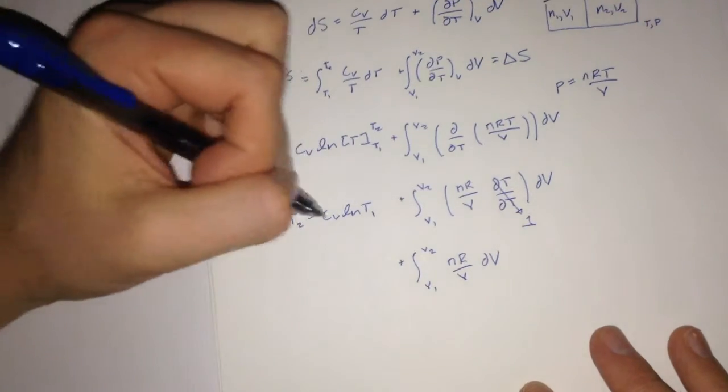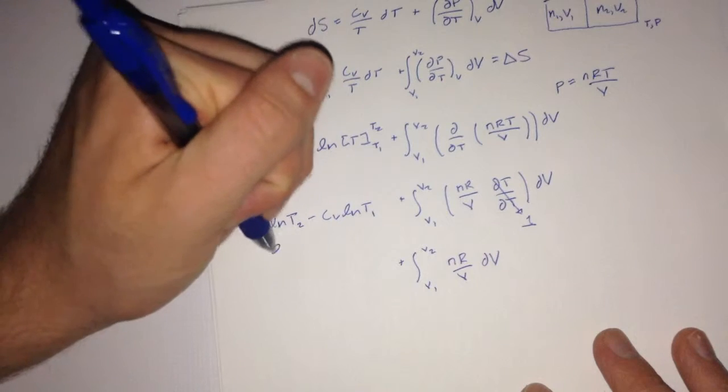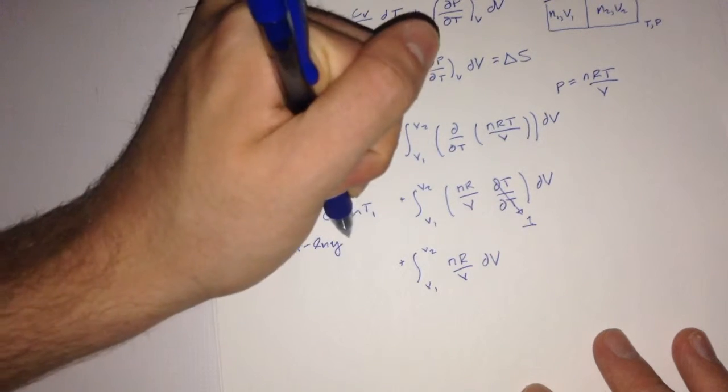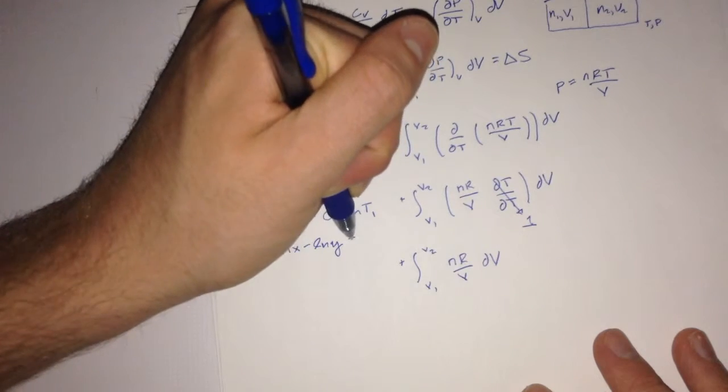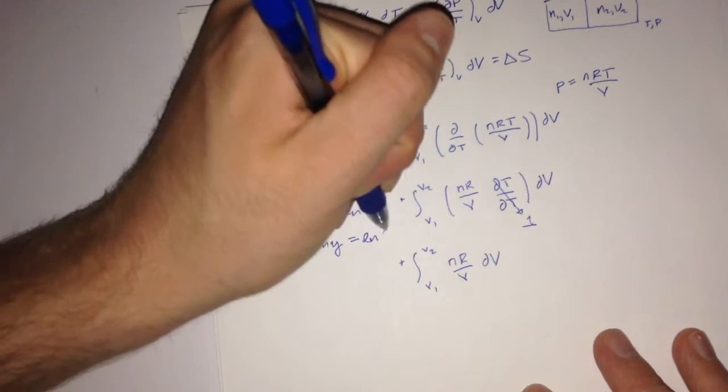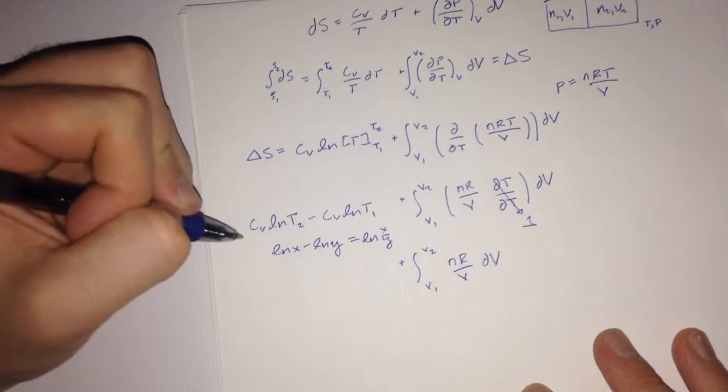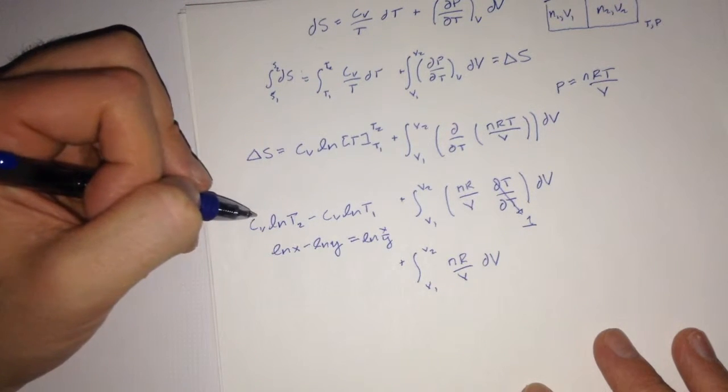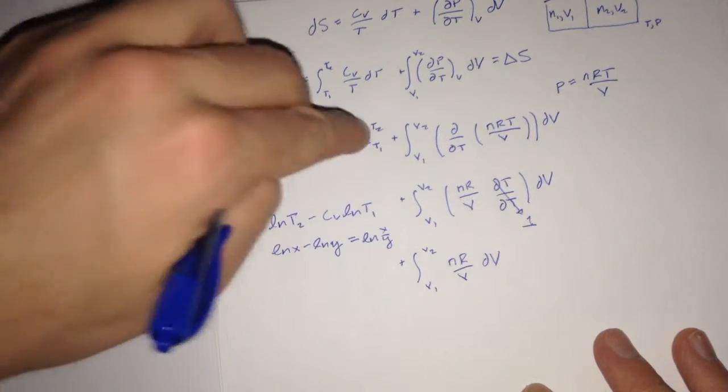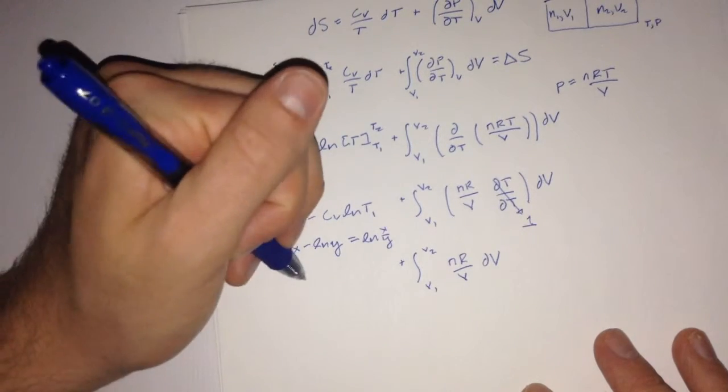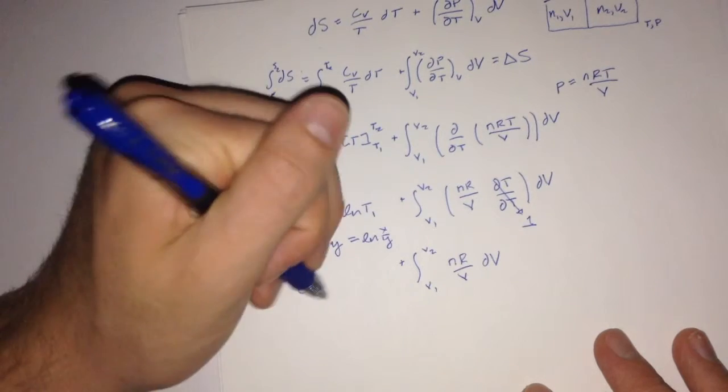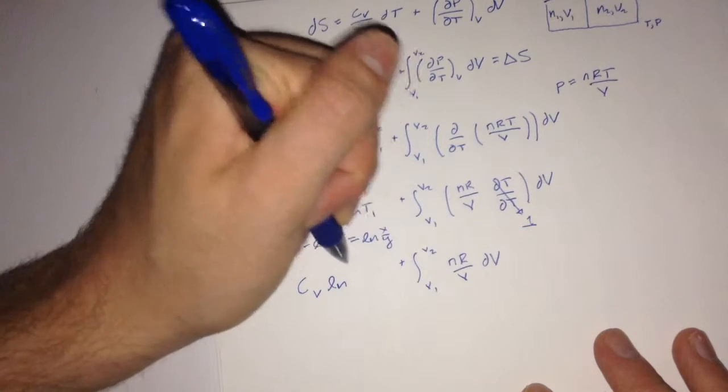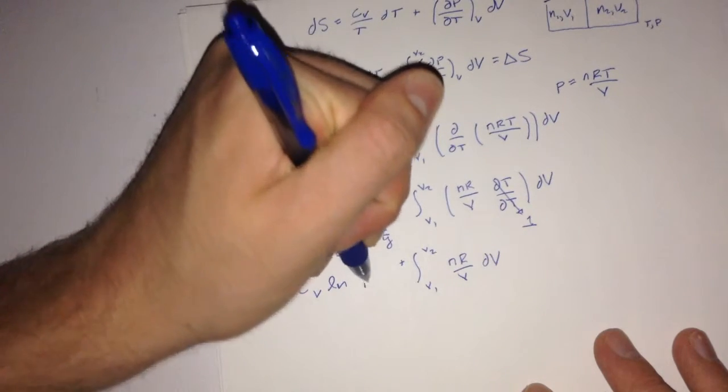And as we know from the rules of log, if we write ln x minus ln of y, we realize that that's equal to ln of x over y. And additionally, we can just pull out the cv through the distributive property. So this term right here will be equal to cv ln of t2 all over t1.